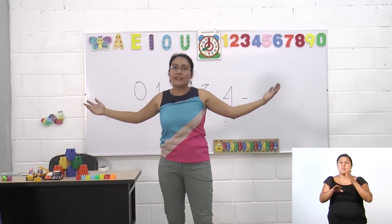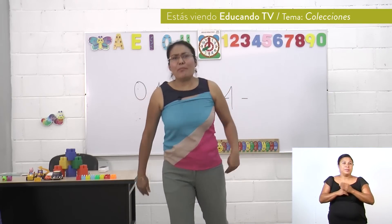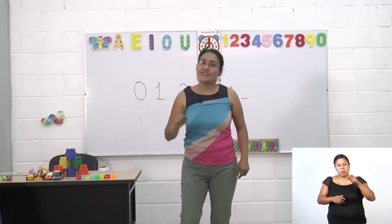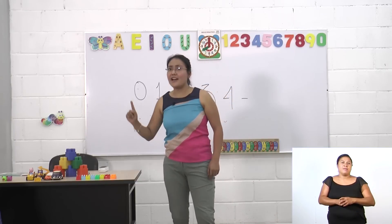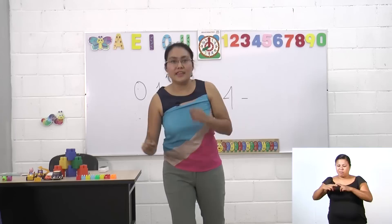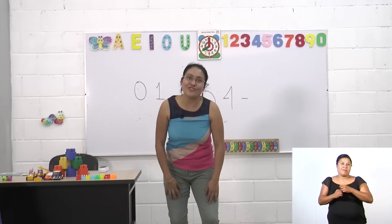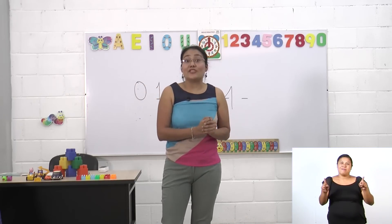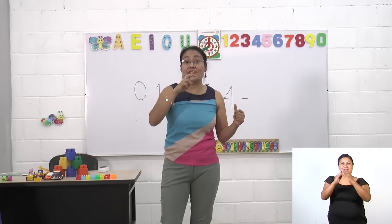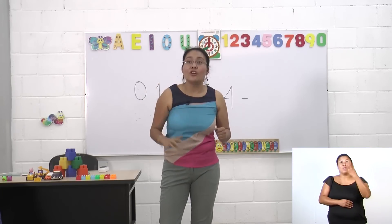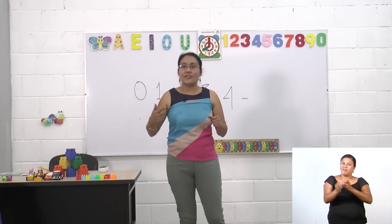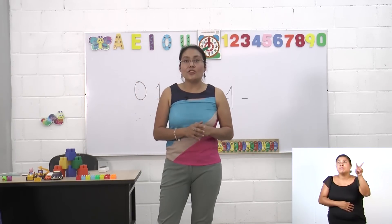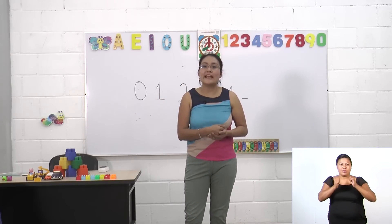Podemos seguir así y llegar a una infinidad de números y de colecciones: de tres en tres, de cuatro en cuatro, de cinco en cinco, de seis en seis. Podemos llegar a una cantidad enorme de colecciones de elefantes. También podríamos entonar la misma canción cambiando el elemento de la colección, siempre y cuando los elementos tengan alguna relación en común. Recuerda que tendría que ser dos pericos, tres pericos, cuatro pericos, cinco pericos. Te invito a que continúes practicando estas colecciones desde tu casa con los elementos que están a tu alrededor. Con esto, damos por culminada nuestra sesión. Te agradezco tu atención y nos vemos en la siguiente clase.